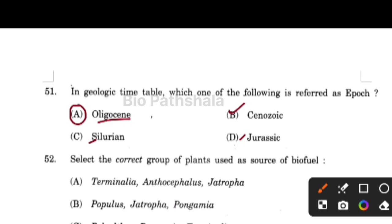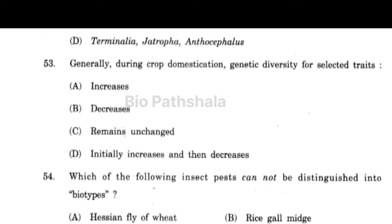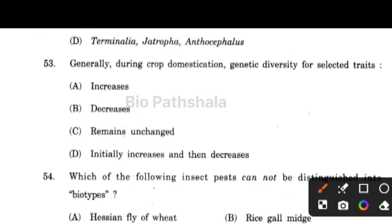Next question: select the correct group of plants used as a source of biofuel. The correct option is option number B — Populus, Jatropha, and Pongamia. Next question: generally during crop domestication, genetic diversity for the selected traits decreases.